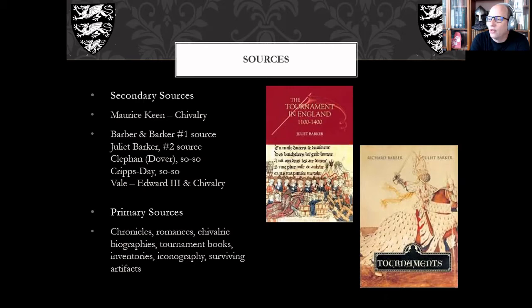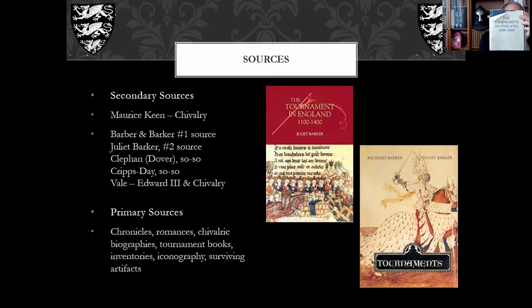The first key source is Maurice Keen's Chivalry — he has a couple chapters devoted to the tournament. Some of you are following through with the School of St. George readings; that's the cornerstone book we use. But the number one tournament book is that Barker and Barber book, and the number two book is Juliet Barker's The Tournament in England — it's getting a little ratty now.